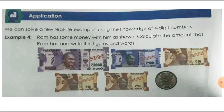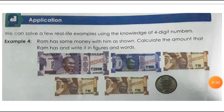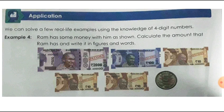So the first question: Ram has some money with him as shown. Calculate the amount that Ram has and write it in figures and words. Here some notes and a coin are shown. We know the expanded form of numbers, and here the expanded form is given. There is 1 note of 2000, then the next note is 1 note of 100, then 3 notes of 10 rupees, and then 1 coin of 5 rupees. So the 1000s, 100s, 10s and 1s — all the places are given here.